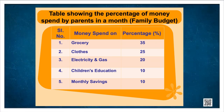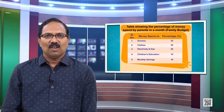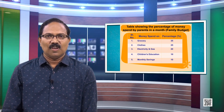Take your family budget as follows — after consulting your parents, find out the percentage of money they spend in a month: Grocery 35%, Purchase of clothes 25%, Electricity bill and gas 20%, Children's education 10%, Monthly savings 10%. Based on this data, draw a pie chart and also interpret the graph.